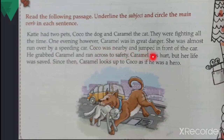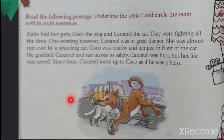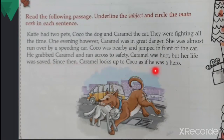She was almost run over by a speeding car. Coco was nearby and jumped in front of the car. He grabbed Caramel and ran across to safety. Caramel was hurt, but her life was saved. Since then, Caramel looks up to Coco as if he was a hero. Earlier they both were fighting, but when Coco saved the life of Caramel, she looked up to him as a hero.